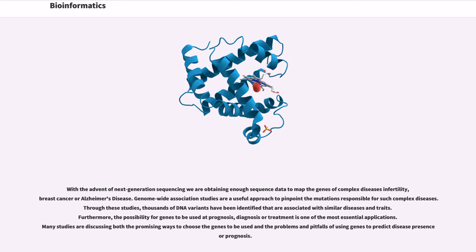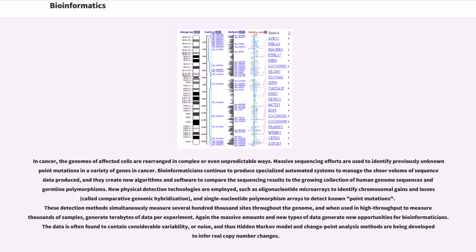With the advent of next generation sequencing we are obtaining enough sequence data to map the genes of complex diseases such as infertility, breast cancer or Alzheimer's disease. Genome-wide association studies are a useful approach to pinpoint the mutations responsible for such complex diseases. Through these studies, thousands of DNA variants have been identified that are associated with similar diseases and traits. Furthermore, the possibility for genes to be used at prognosis, diagnosis or treatment is one of the most essential applications. In cancer, the genomes of affected cells are rearranged in complex or even unpredictable ways.